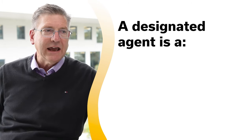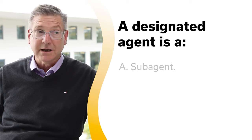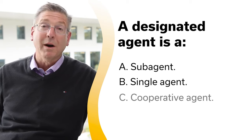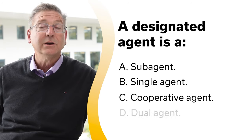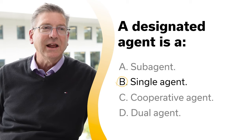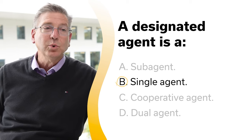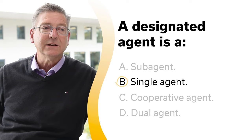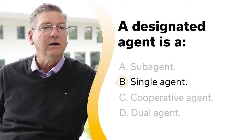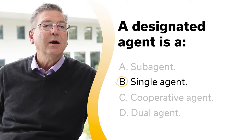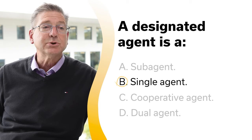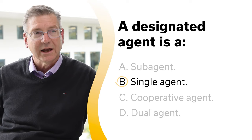A designated agent is: A, a sub-agent; B, a single agent; C, a cooperative agent; or D, a dual agent. The correct answer is B, single agent. Within a dual agency, the broker may assign one sales agent to the seller and another sales agent to the buyer. The broker remains the dual agent, but the designated sales agents are single agents, each with the duty of undivided loyalty to their clients.